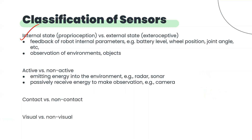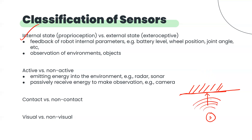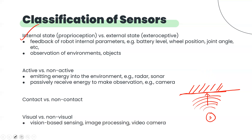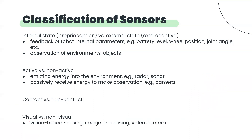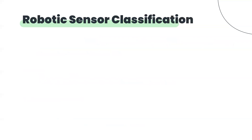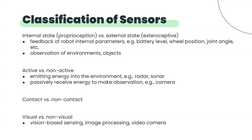The third classification is contact and non-contact. Suppose we need to detect some obstacle — we can have sensors that touch it, or sensors that are not in contact, for example based on vision, image processing. Some are non-visual. So those are the categories and classifications we have.